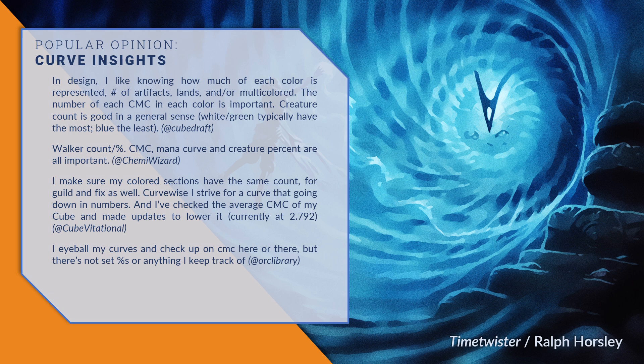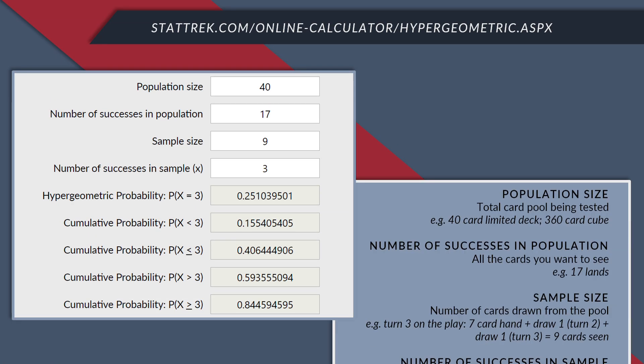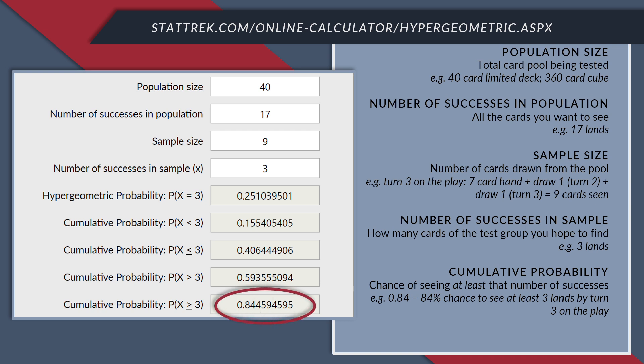My question about how many lands I want in a deck can be approached via hypergeometric analysis. Let's run some sample numbers using the hypergeometric calculator at StatTrek — it is a free tool linked in the video description. Imagine that our limited deck quite badly wants to hit its third land drop on time. Let's calculate how likely that is if we run 17 lands in our 40-card deck, as conventional wisdom dictates. We input 40 for population size, and 17 for number of successes in the population.